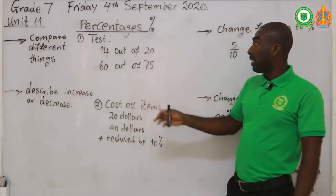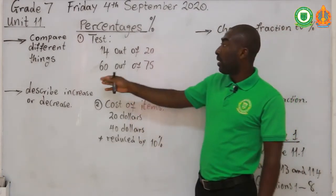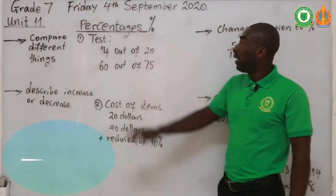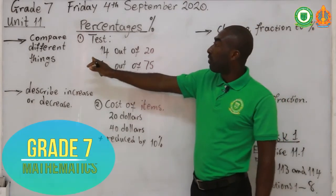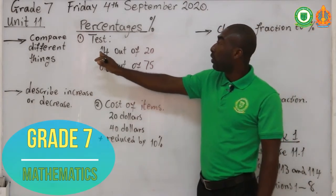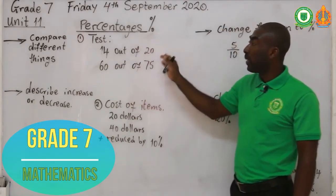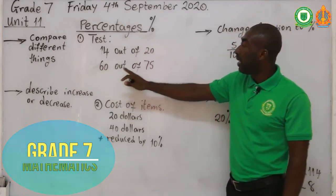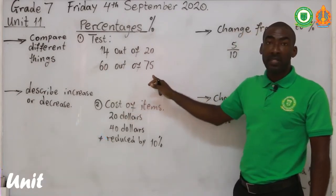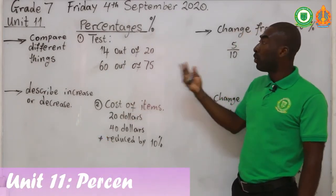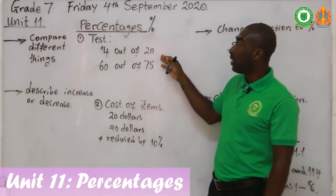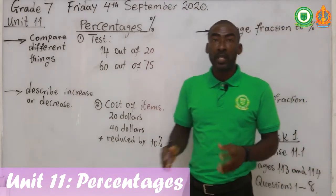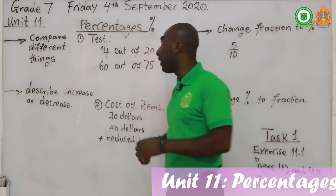So first, let's say two tests were conducted: the first one is math and the other is English. In math you had 14 out of 20, and in English you had 60 out of 75. We want to use percentages to see which one you did well in and which one you didn't do as well in.